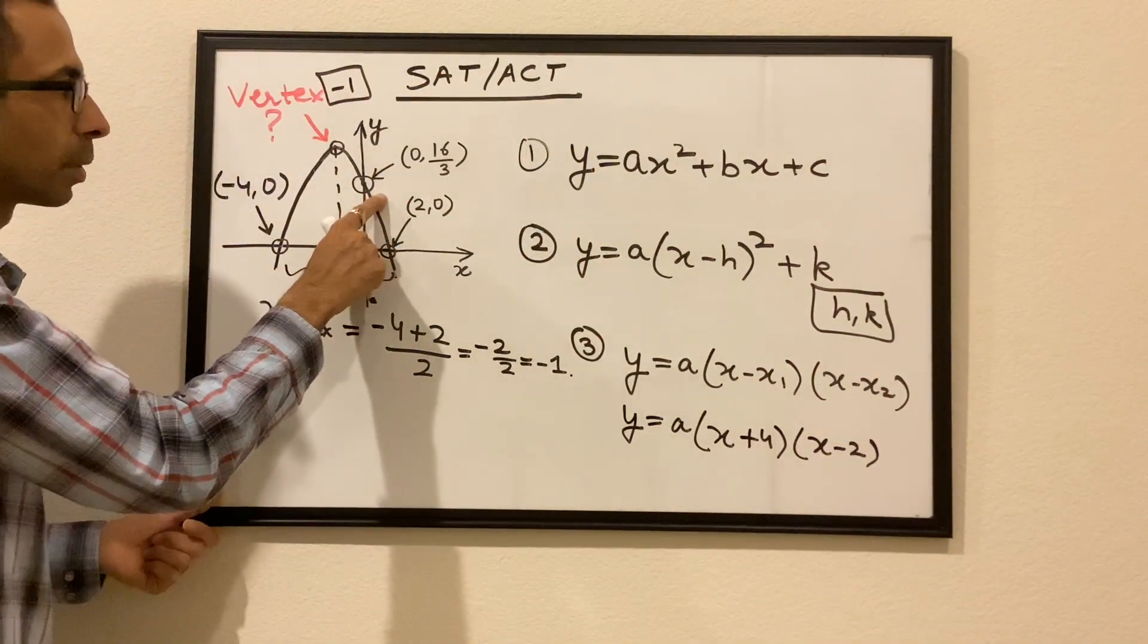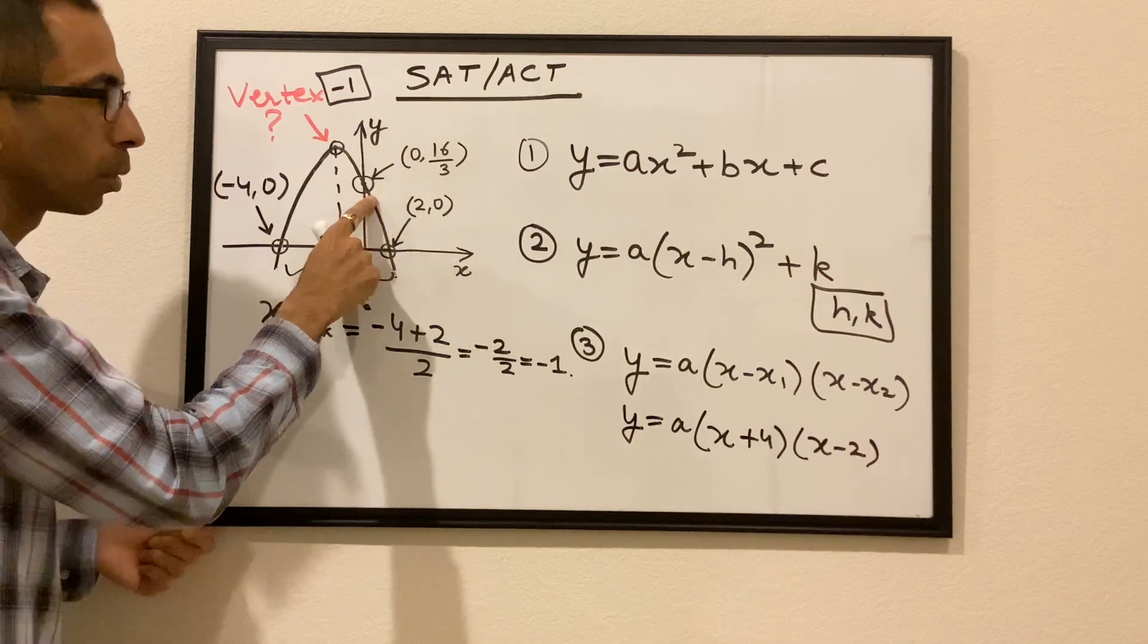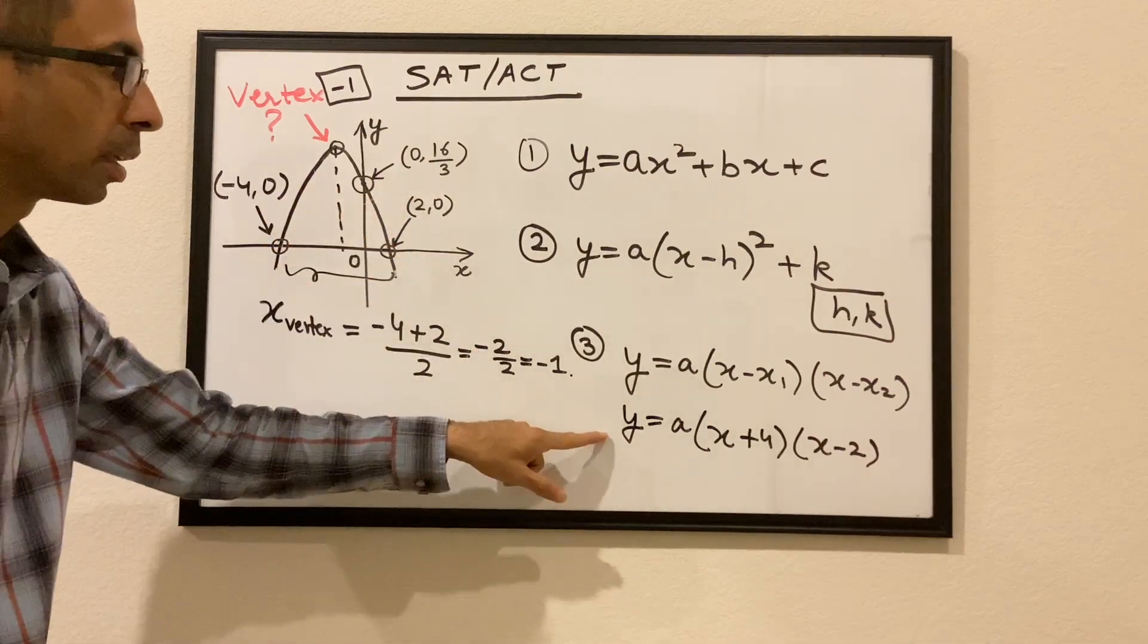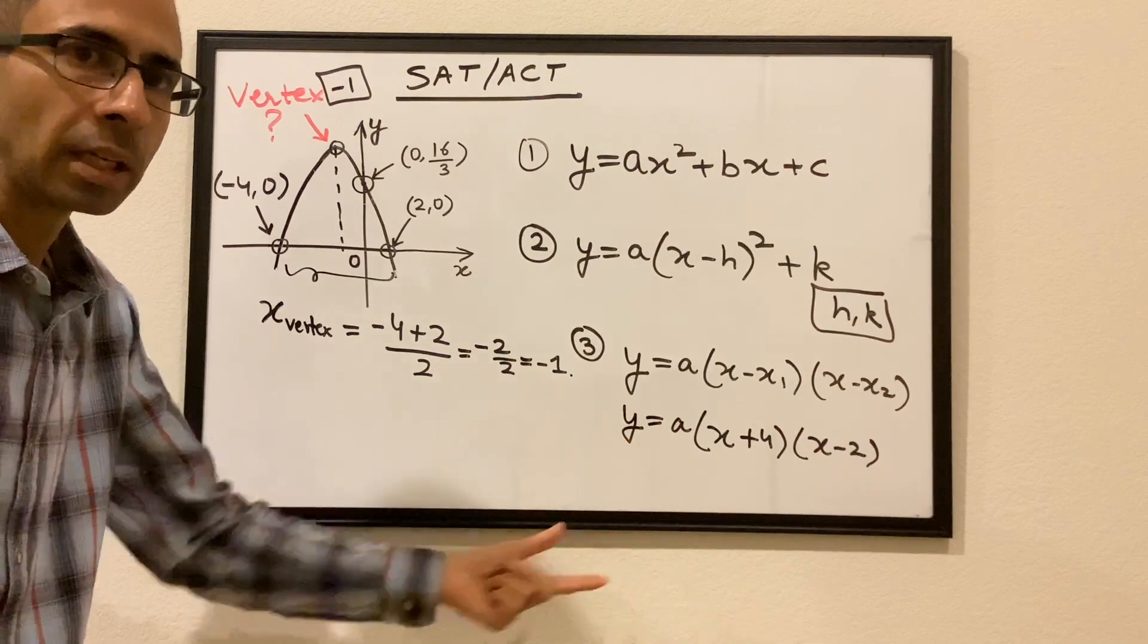Now, we also know the other point, 0,16/3, which is on the parabola. So we can put this point here in terms of y and x and get the value of a.